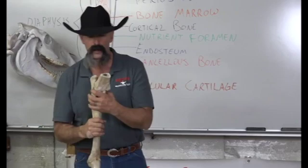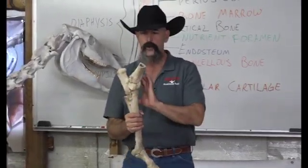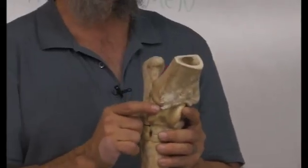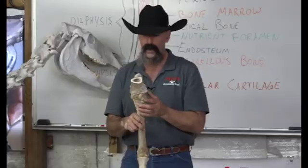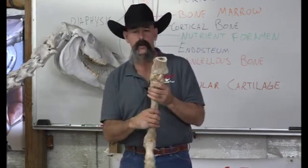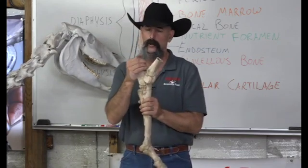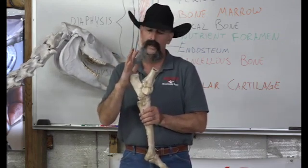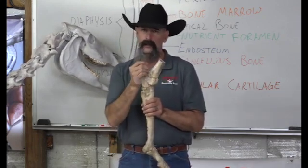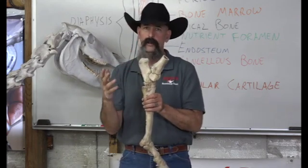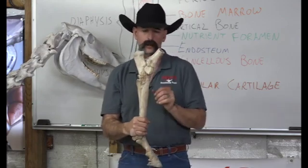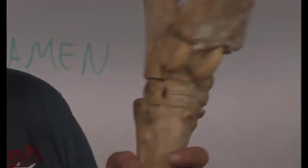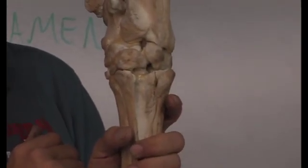Our ankle bones are equivalent to the horse's tarsal bones. There are four joints in the tarsus. The tibia hits the talus, which has trochlea oriented slightly to the outside, allowing a lot of movement — that's called the tarsocrural or tibiotarsal joint. The large bone sticking up is the calcaneus, sometimes called the fibular tarsal bone. It's the insertion for the superficial flexor tendon, the gastrocnemius, and has the plantar ligament on it. Its position away from the other bones changes leverage and power.